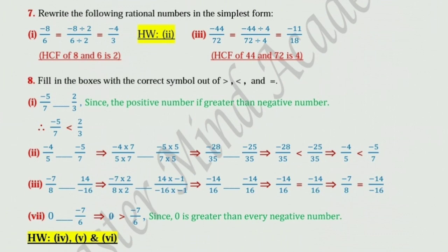Seventh one: 0 and minus 7 upon 6. Zero is greater than minus 7 upon 6, since 0 is greater than every negative number. Now try to solve the 4th, 5th and 6th by yourself.